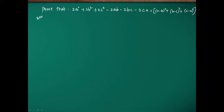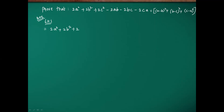I am taking the left hand side of the given expression. So in the LHS we have 2a² + 2b² + 2c² - 2ab - 2bc - 2ca.